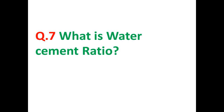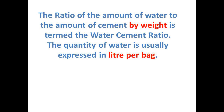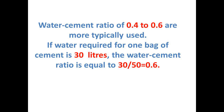What is water cement ratio? The ratio of the amount of water to the amount of cement by weight is termed as water cement ratio. The quantity of water is usually expressed in litres per bag. The water cement ratio of ordinary Portland cement is 0.4 to 0.6, and these are most typically used.